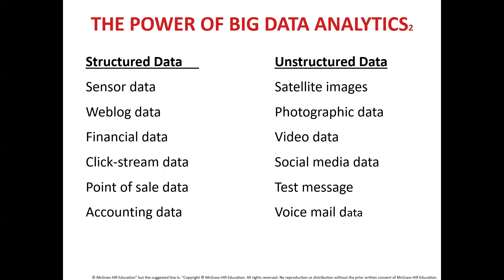It is important to know that big data includes both structured and unstructured data. Unstructured data is far more difficult to store, analyze and mine. Examples of structured data include census data, weblogs, finance or financial departments, clickstream, point of sale, and accounting. Unstructured data includes satellite images, photographic data, video data, data from social media, text messages and voicemail.